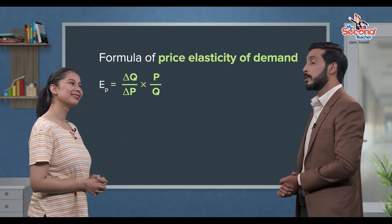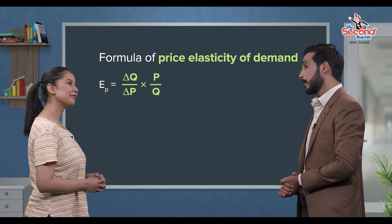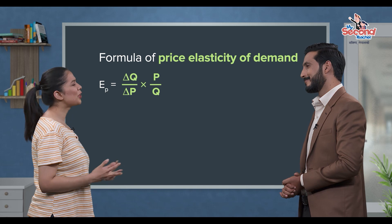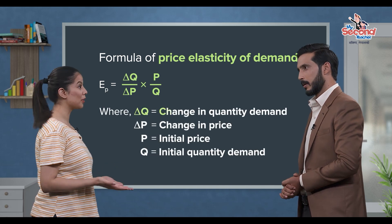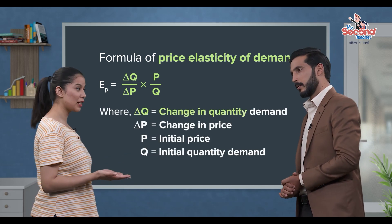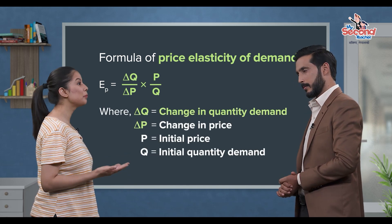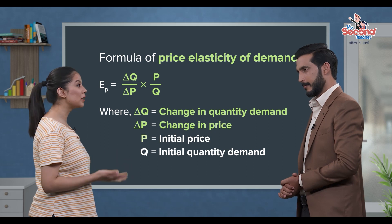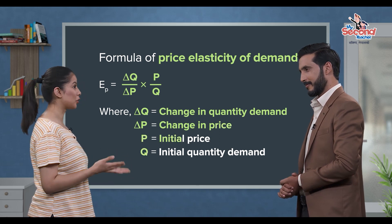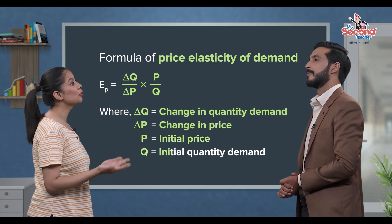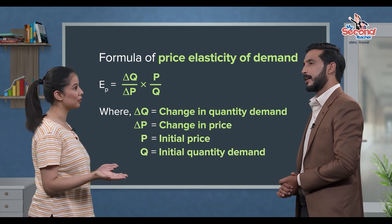What is the meaning of these symbols? Delta Q represents the change in demand, delta P represents the change in price, and P and Q are the initial price and quantity demanded.